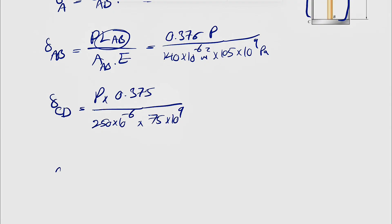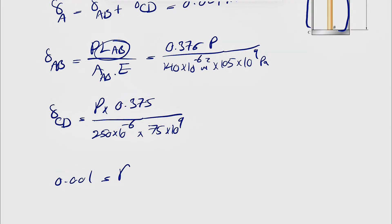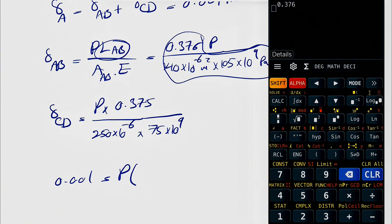So we're just going to put all of these in here. 0.001 is equal to, we can factor P. This value, let's calculate this, 376 divided by 140 times 105 times 1000.